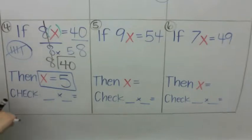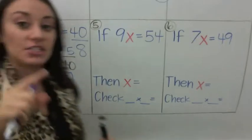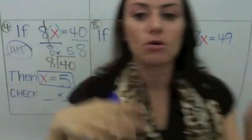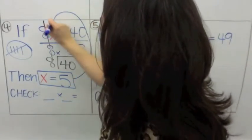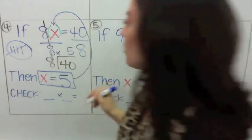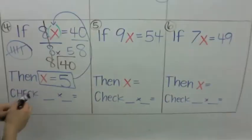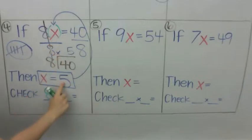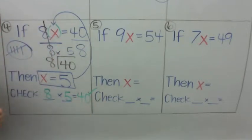Now an extra step today is checking your work. Because the opposite of multiplication is division, and the opposite of division is multiplication. So we check our work by plugging x back into the original equation. The original equation is 8x equals 40. If x is 5, does 8 times 5 equal 40? Yes. So you put a little check mark at the end.